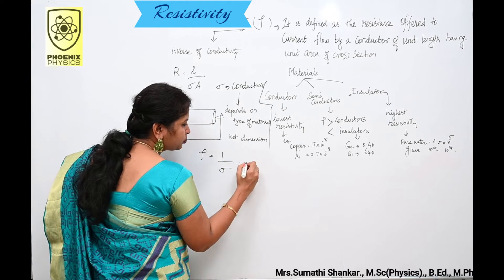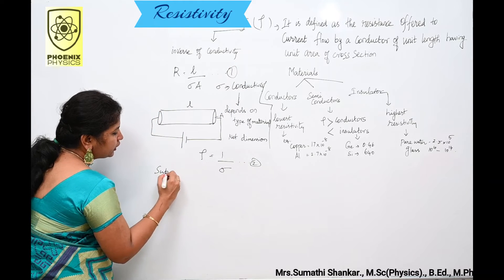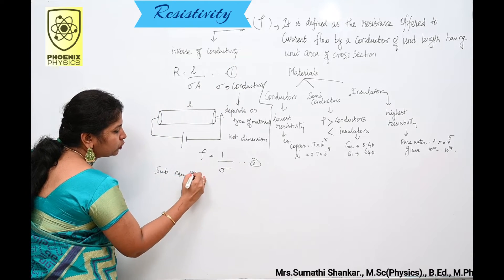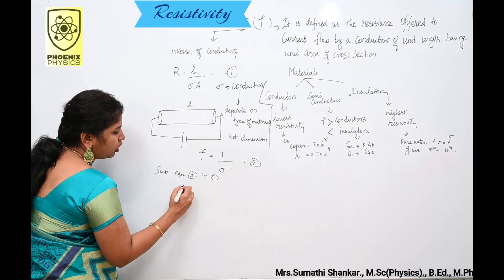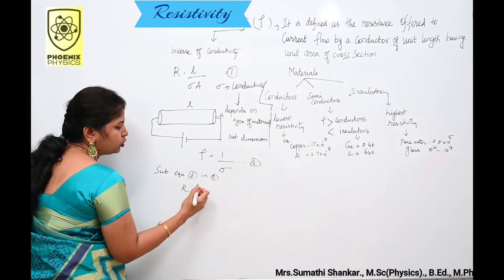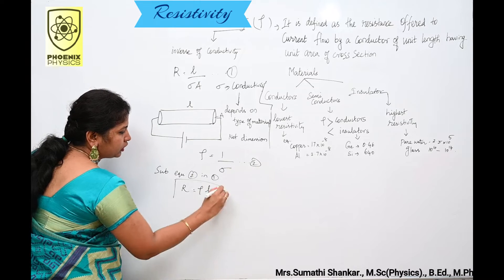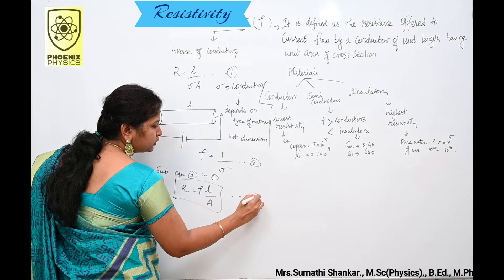Consider this as my equation 2 and this is my equation 1. Substitute equation 2 in 1. So, R is equal to 1 by sigma is Rho. So, Rho into L by A. This is equation 3.